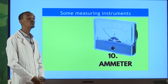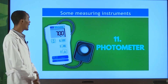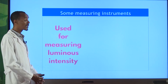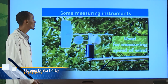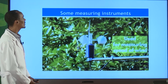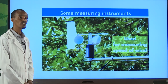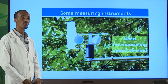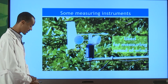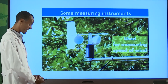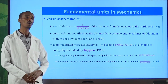A photometer is used to measure the intensity of light — since luminous intensity is one of the seven basic physical quantities. An anemometer measures the speed of wind. A beam balance measures the mass of an object. These are a few of the many measuring instruments; different devices exist for different types of physical quantities.